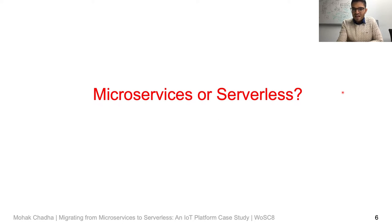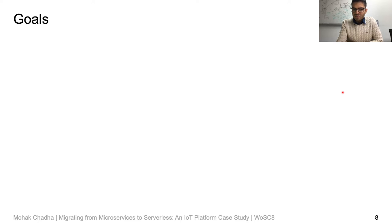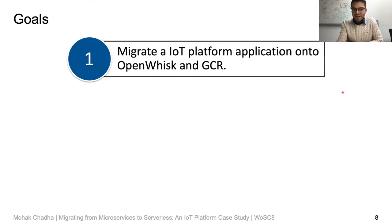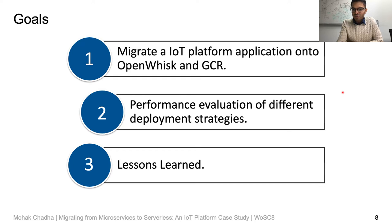Both microservices and serverless architectures have their advantages and disadvantages, and the decision to adopt one over the other depends on several factors. To try and answer that question, in this work we migrate a microservices-based IoT platform application onto Apache OpenWhisk and GCR. We evaluate the different deployment strategies with respect to performance metrics, and finally we highlight some lessons learned from this work.